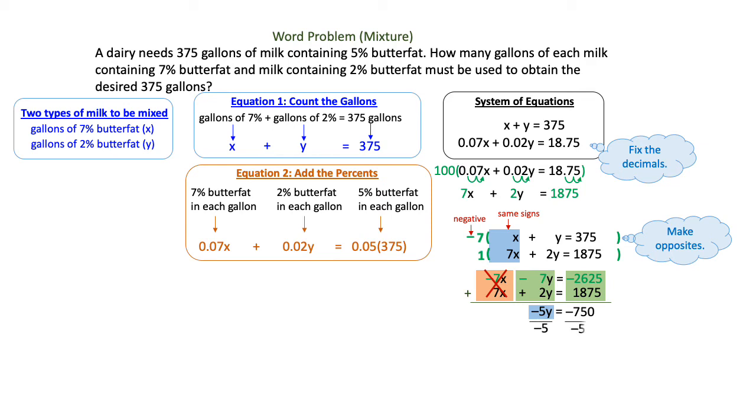Next I'm going to divide by the negative 5 that's in front of the y. And when I divide negative 750 divided by negative 5, that will give me a positive 150. So y is equal to positive 150. And y also represented my 2% butterfat gallons. So that's how many gallons of 2% butterfat I'm going to use in my mixture.